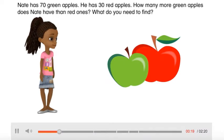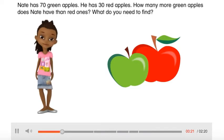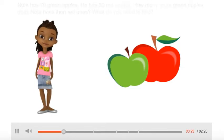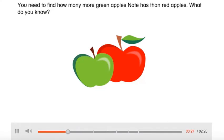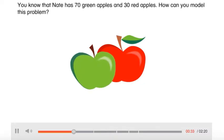What do you need to find? You need to find how many more green apples Nate has than red apples. What do you know? You know that Nate has 70 green apples and 30 red apples. How can you model this problem?